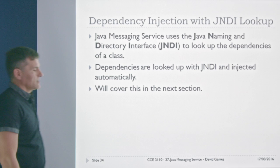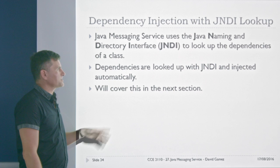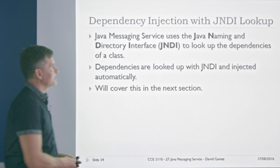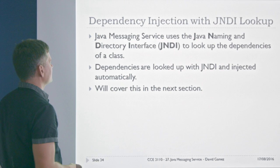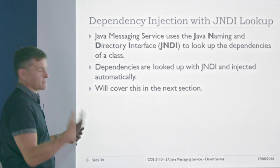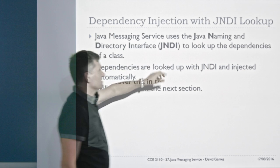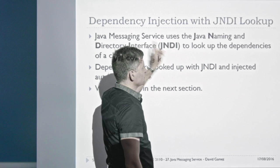How this actually works with JMS is through the JNDI lookup service — the Java Naming and Directory Interface. JNDI is used to look up the dependencies of a class and inject them automatically, in exactly the same way as Spring does. Don't confuse Java RMI with JNI (Java Native Interface), Jini, or JNDI — it's an absolute nightmare with these Java acronyms.